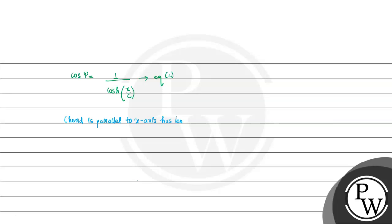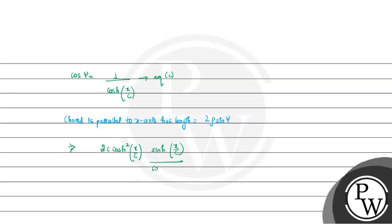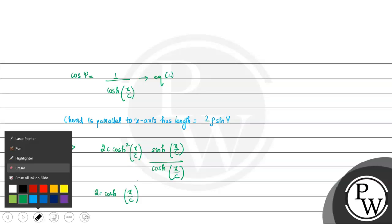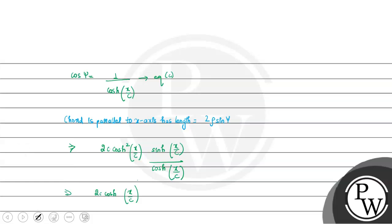Substituting: 2·c·cosh²(x/c)·sinh(x/c)/cosh(x/c) = 2c·cosh(x/c)·sinh(x/c). The cosh terms simplify, leaving 2c·cosh(x/c)·sinh(x/c).